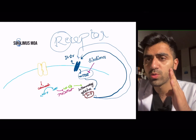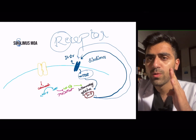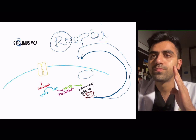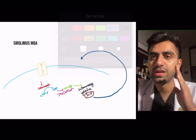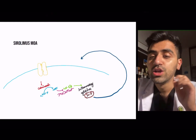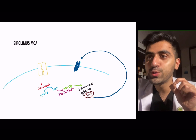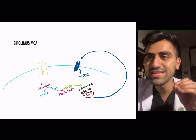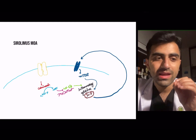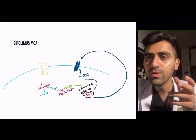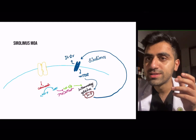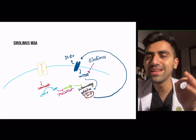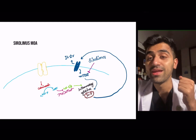To recap: IL-2 activates IL-2R, which leads to activation of the mTOR signaling system, which further activates IL-2. Sirolimus blocks the mTOR signaling pathway. Simple as that.